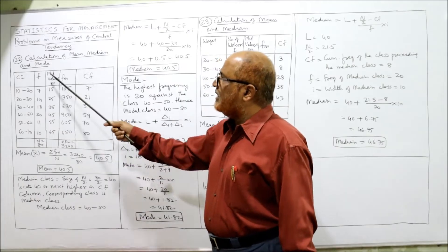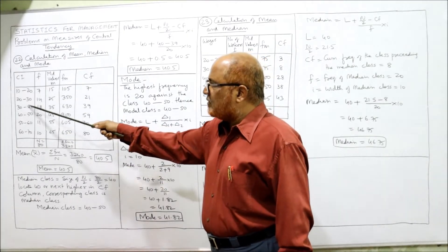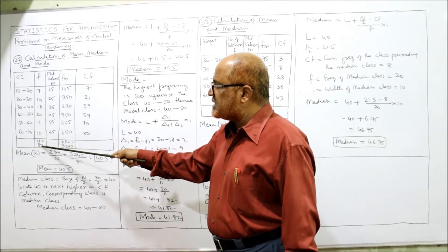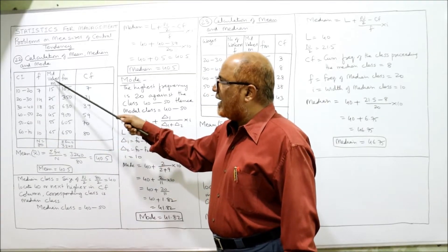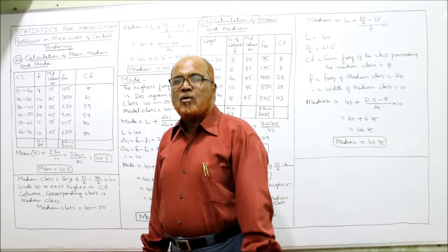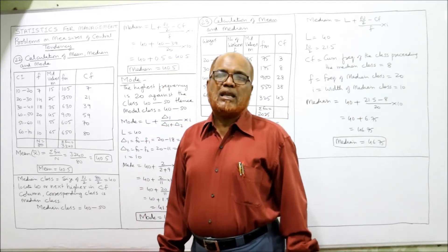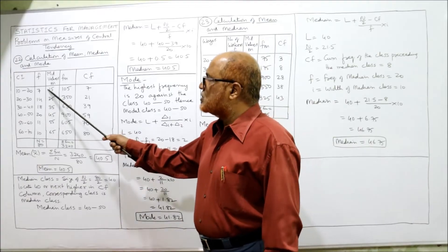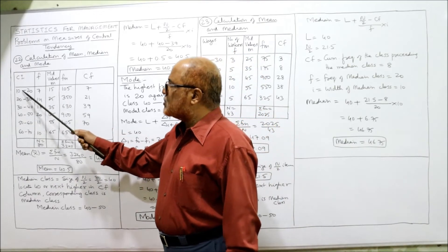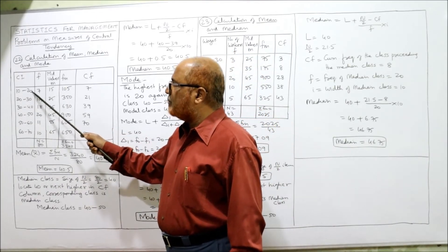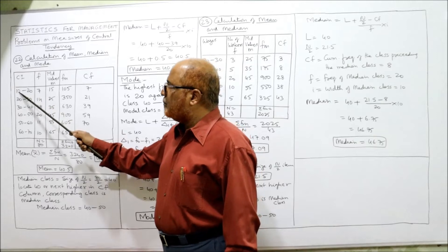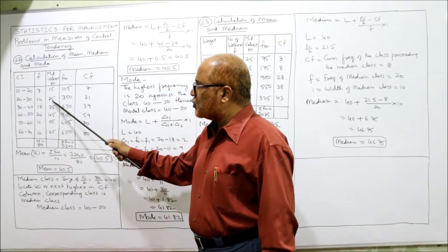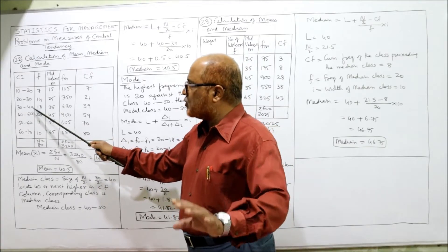Here you can see the calculation of mean, median, and mode. Class intervals and frequencies are given; the total frequency is 80. Mid values are required for calculating the arithmetic mean. To calculate mid values: lower limit plus upper limit divided by 2. So 10+20÷2 = 15, 20+30÷2 = 25, 30+40÷2 = 35, and so on.